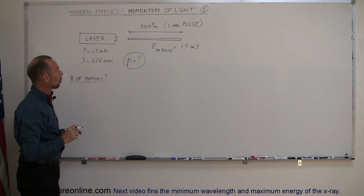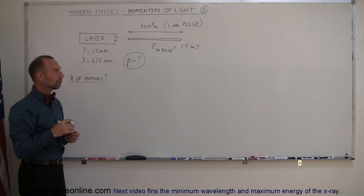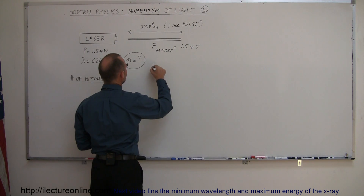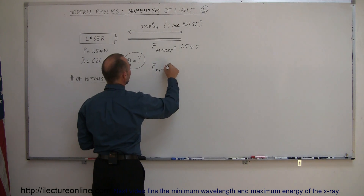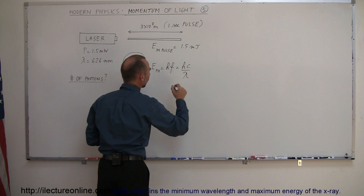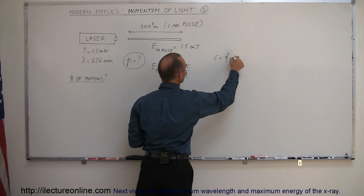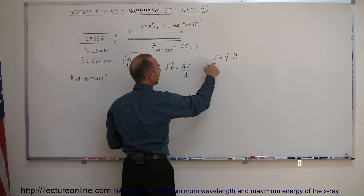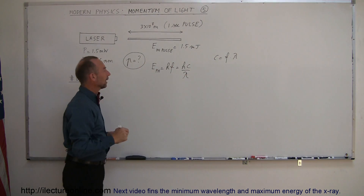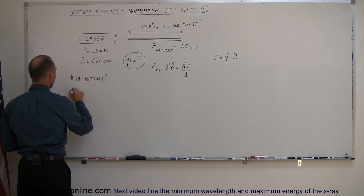Now let's figure out how much energy there is in a single photon. The energy in one photon is equal to h times the frequency, which is equal to hc over lambda, because c equals frequency times wavelength, so frequency can be replaced by c divided by lambda. That way we have the energy per photon in terms of wavelength.